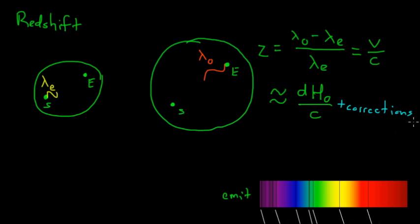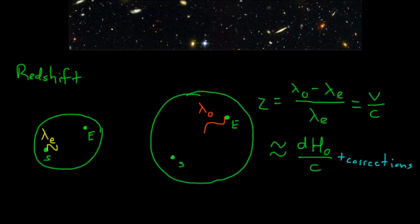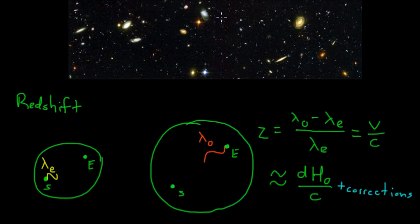So this redshift is really the way that we have for measuring the distances to some of the most distant galaxies. And very often in the scientific literature, instead of saying that a galaxy is a certain number of light years away, sometimes they will just quote what the redshift is. So it's really the method that we use to measure the most distant objects in the universe.